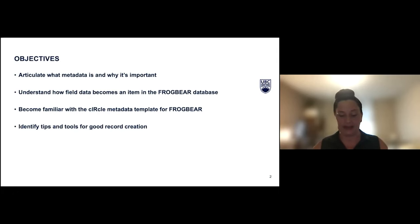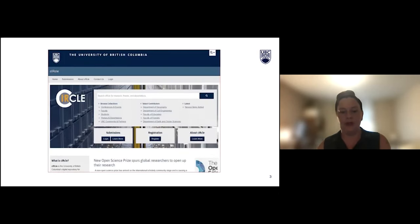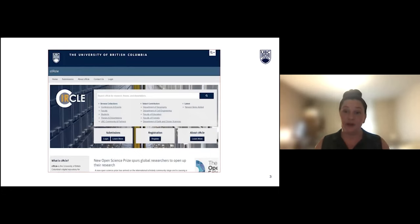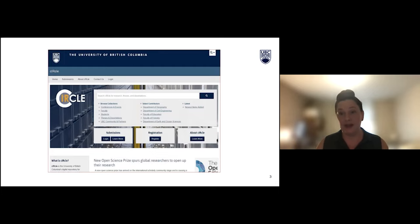We're going to echo a little bit of what Bruce was mentioning in terms of what metadata is and why we need it, and take a bigger look at how CIRCLE processes that for discoverability and access. For those of you who aren't familiar, CIRCLE is an open access digital repository specifically for the research and teaching outputs of the University of British Columbia and its partners. Our mandate is about making material openly accessible and preserving it for future generations. We currently have over 75,000 items, and as Bruce mentioned, around 900 of those are from FrogBear specifically.